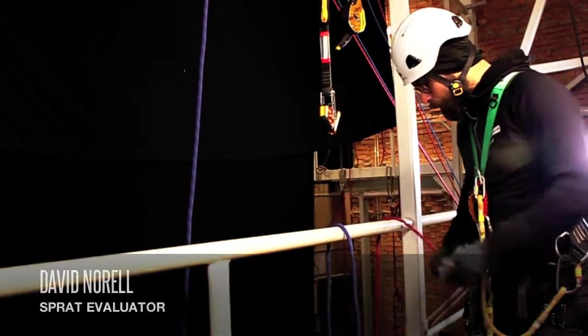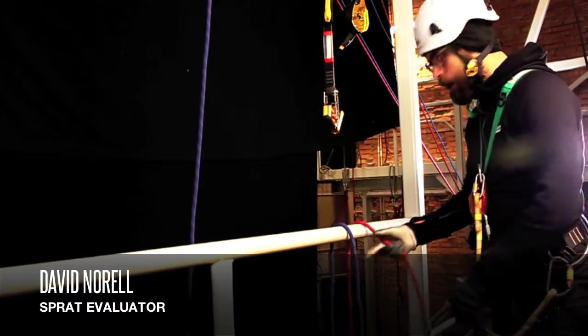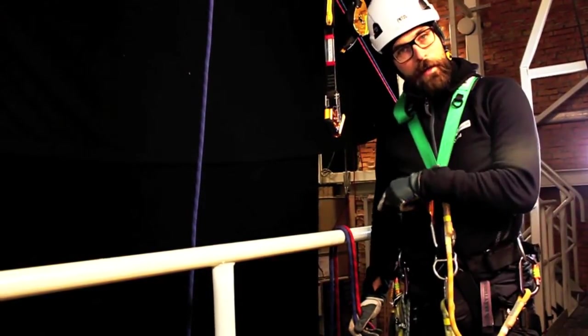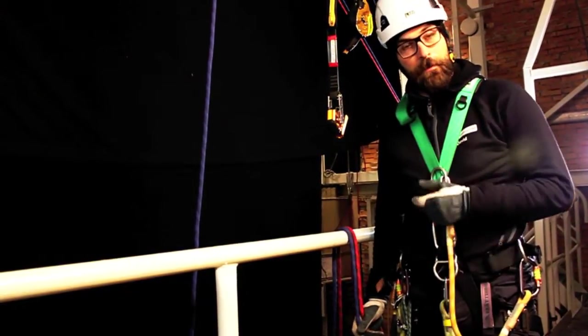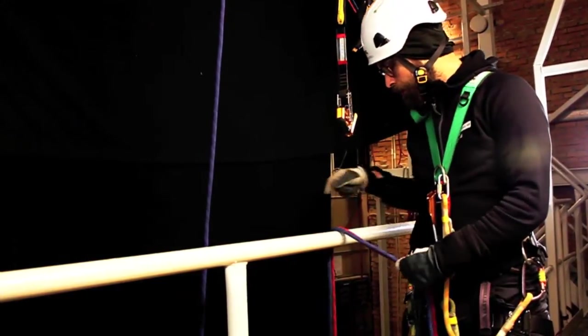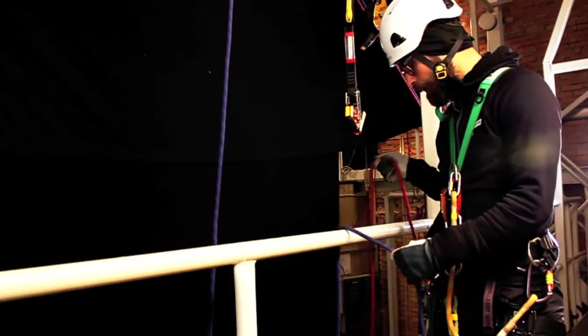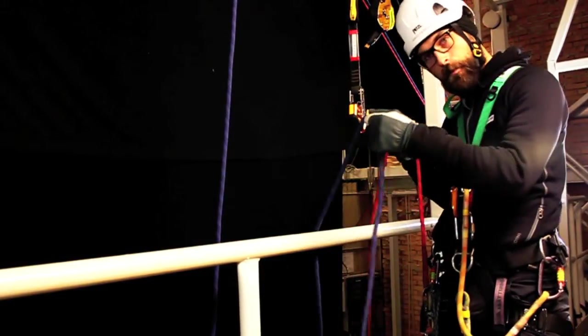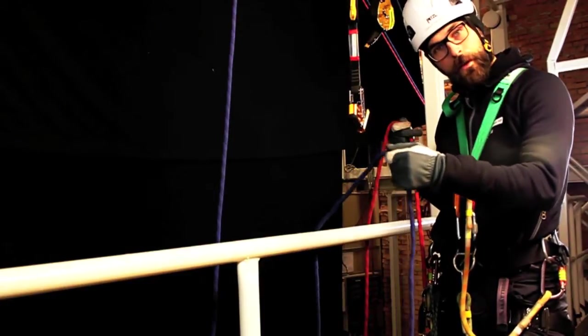Now we are going to do some hauling from platform level two exercise, where I got a load or a casualty, or someone who just wants to come up from the ground. I just tied them in here. I got the red rope here tied into the lower D-ring, the blue rope is tied into the sternal D-ring.